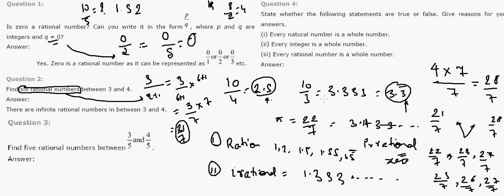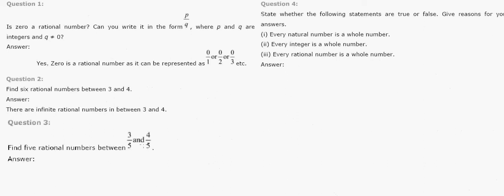Now question 3: find 5 rational numbers between 3 by 5 and 4 by 5. Since we need 5 rational numbers, divide and multiply by n plus 1, which is 6. So 3 by 5 multiplied by 6 over 6 gives 18 by 30.